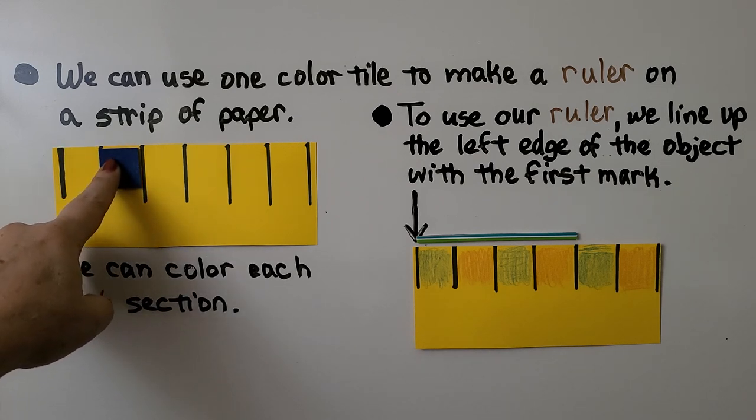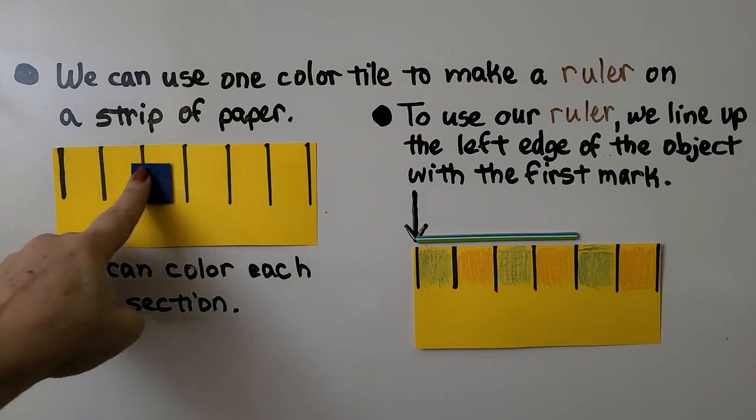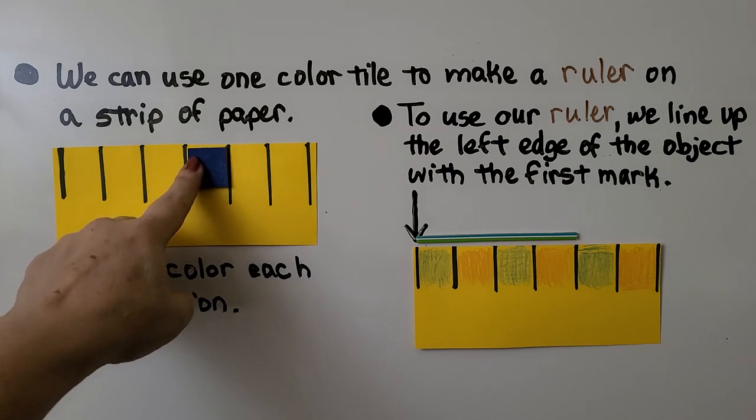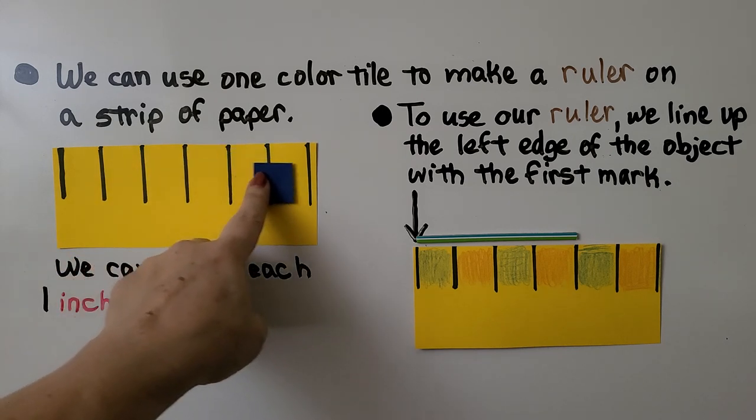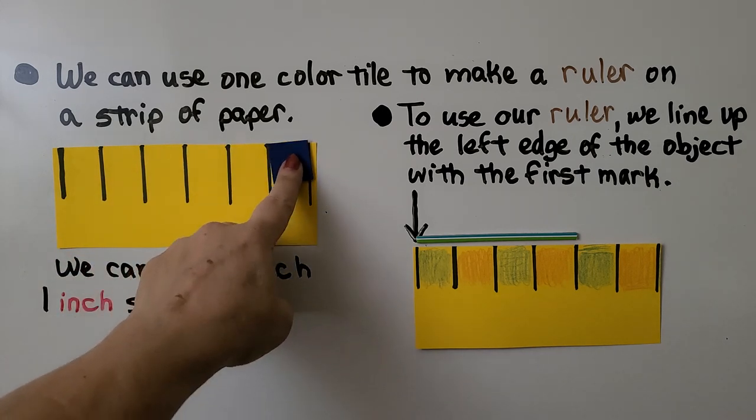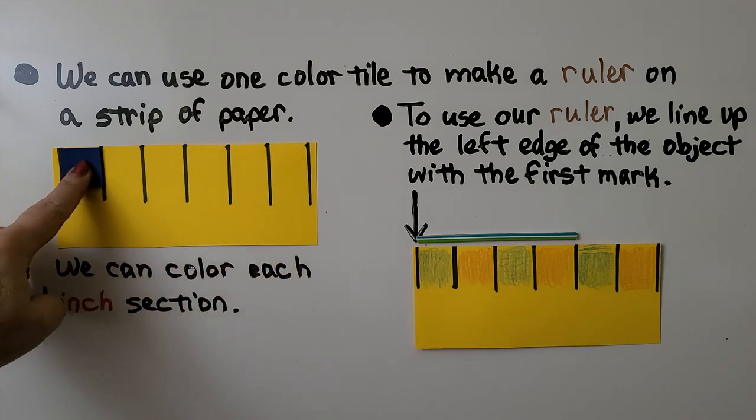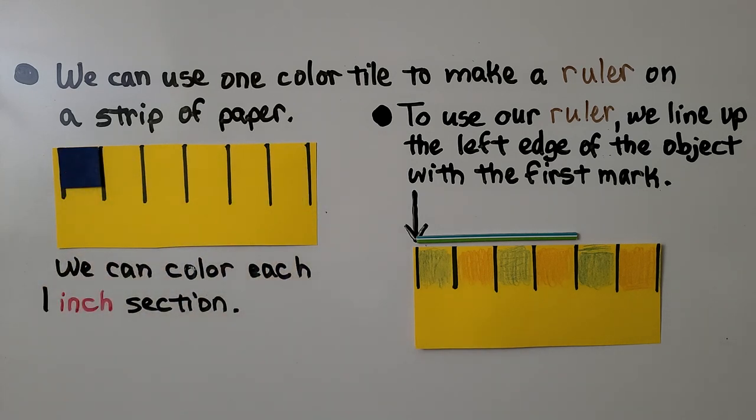We move the color tile over, draw a line, move it over, draw a line. We keep doing that and drawing the line on the other side of it until we get to the end. And now we've got our own ruler. And we can color each one inch section. If you color it a different color, it'll be easier to count.